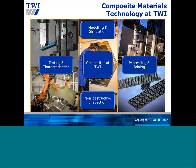The composite group at TWI focuses on a few key areas: some related to processing and joining — how can we make metal-to-composite joints, how can we make composite-to-composite joints. Looking at non-destructive inspection — on the bottom left you can see robotic inspection of a large composite panel — as well as testing and characterization and simulating those. It's a bit of a one-stop shop in terms of being able to understand, characterize, simulate, and assess composite structures.